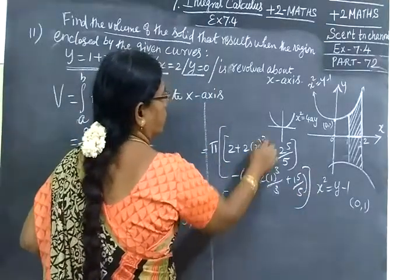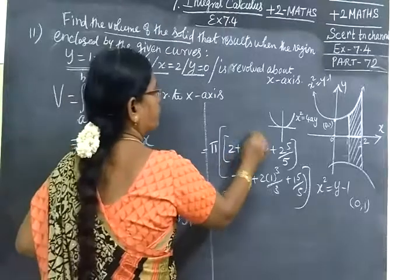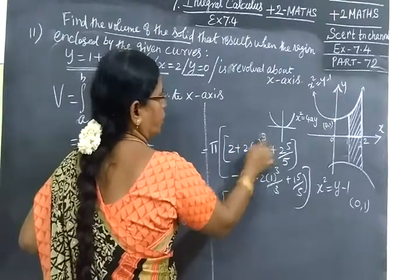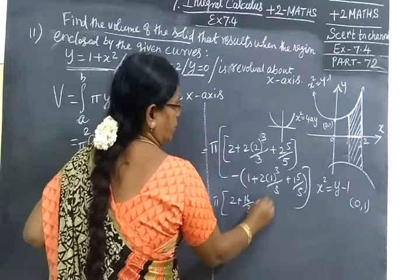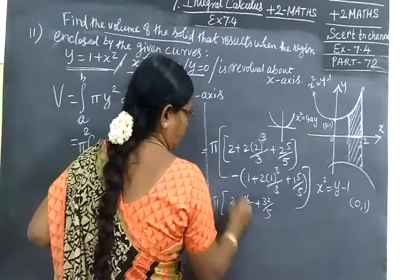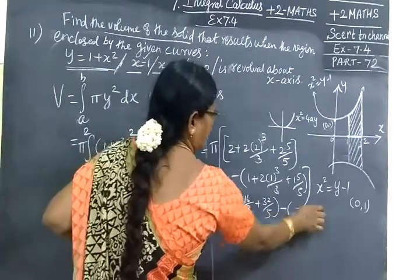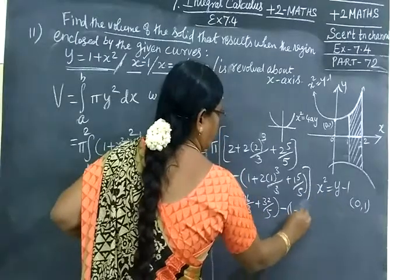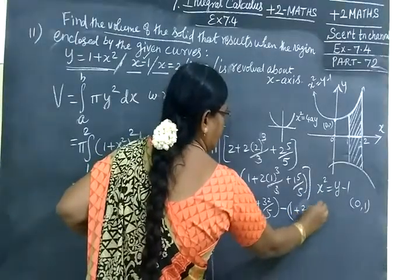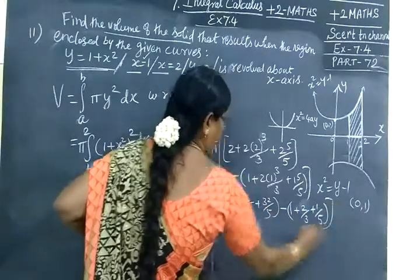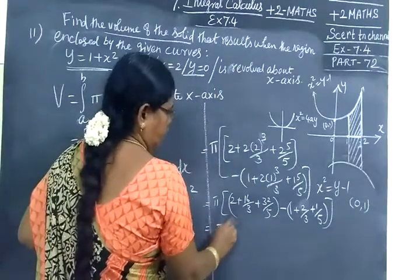2 plus 2 cube is 8, 8 into 2 is 16, so 16/3 plus 32/5 minus lower limit 1 plus 2/3 plus 1/5.